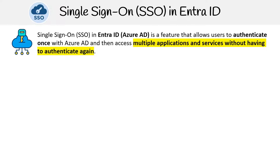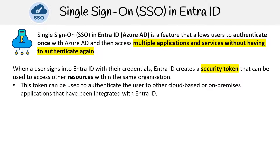The next topic we'll be covering is Single Sign-On with Entra ID. Single Sign-On is a feature that allows users to authenticate once with Entra ID and then access multiple applications and services without having to authenticate again. When a user signs into Entra ID with their credentials, Entra ID creates a security token that can be used to access other resources within the same organization. This token can be used to authenticate the user to other cloud-based or on-premises applications that have been integrated with Entra ID.